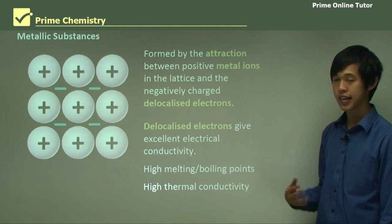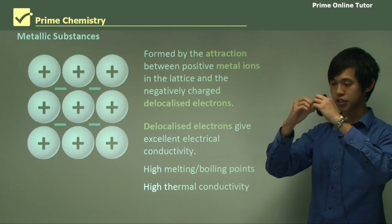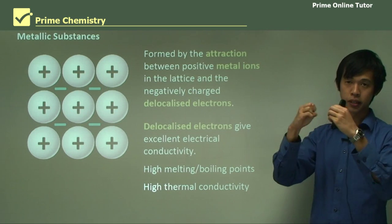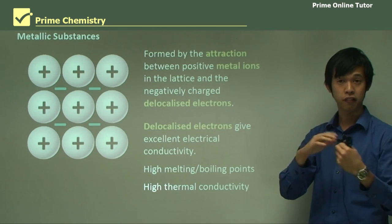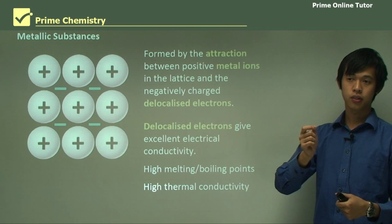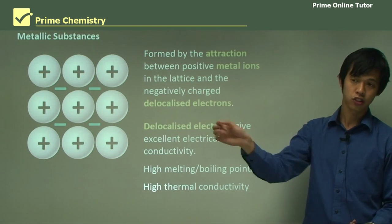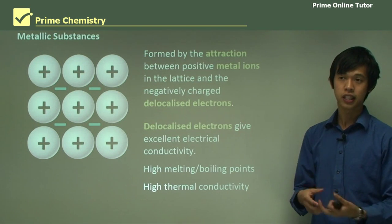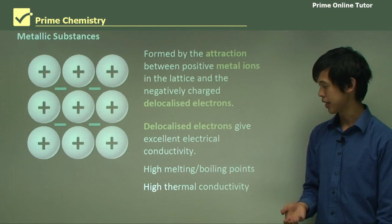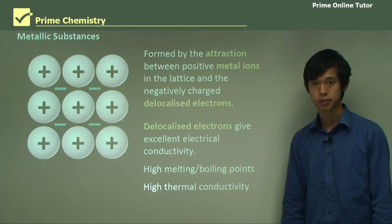Metallic substances have excellent thermal conductivity because each of those nuclei are very close together, so they can bump into each other and spread vibrations. Also, the electrons, which can be excited by thermal energy, can actually go and strike other nuclei and make them vibrate as well. This helps to increase the thermal conductivity of that substance.